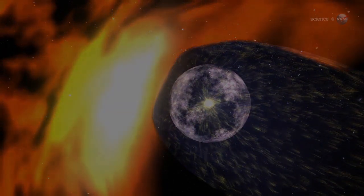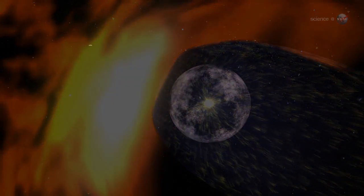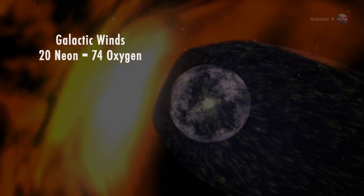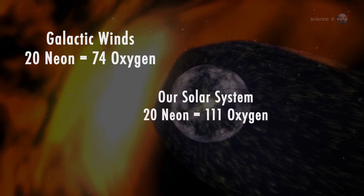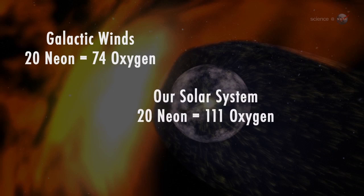The IBEX team reported that for every 20 neon atoms in the galactic wind, there are 74 oxygen atoms. In our own solar system, however, for every 20 neon atoms there are 111 oxygen atoms.